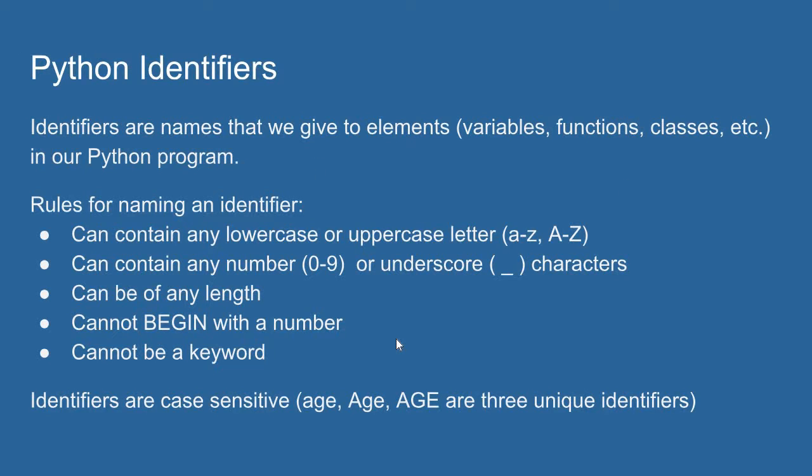Here are the rules for naming an identifier. An identifier can contain any uppercase or lowercase letter. It can contain any number value, and it can contain an underscore character. So letters, numbers, and an underscore are valid characters to use in an identifier.